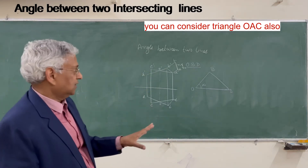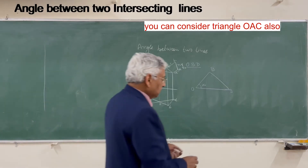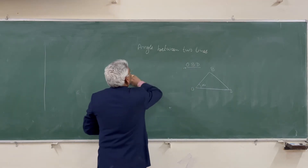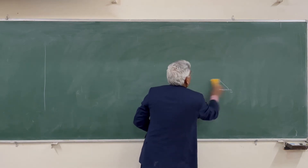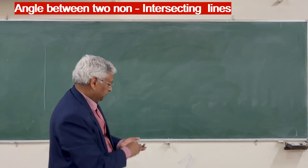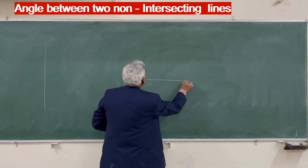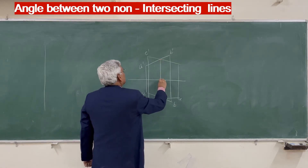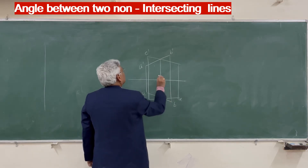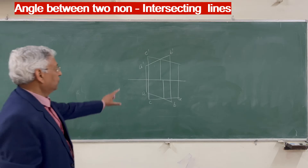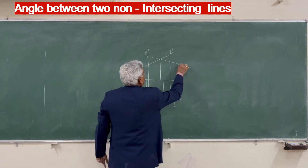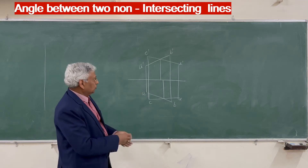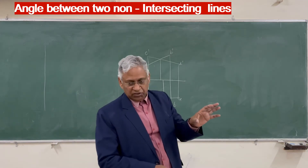That gives the angle between two intersecting lines. But the problem becomes slightly complex when the lines are not intersecting. When the lines are non-intersecting — say you have two lines where the projectors are not intersecting — lines AB and CD are non-parallel because their projections are not parallel to each other. To determine the angle between these two lines, what we do is make these lines into intersecting lines.